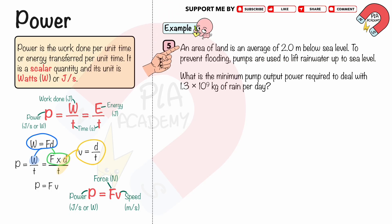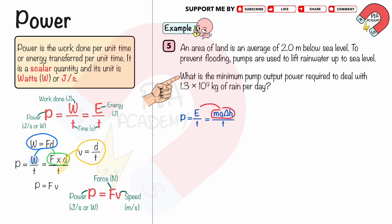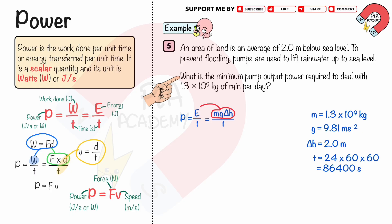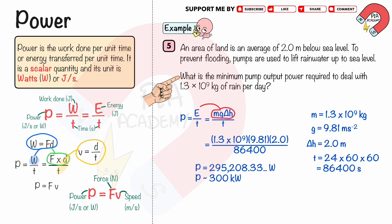Work example 5. An area of land is an average of 2 meters below sea level. To prevent flooding, pumps are used to lift rainwater up to sea level. What is the minimum pump output power required to deal with 1.3 times 10 to the power 9 kilograms of rain per day? The power can be calculated using P equals E divided by T, where the energy E equals gravitational potential energy MG delta H. The mass M equals 1.3 times 10 to the power 9 kilograms, G equals 9.81 m/s squared, delta H equals 2 meters, and time T is 1 day equals 86,400 seconds. Substituting, we get the power P equals 300 kilowatts to two significant figures.